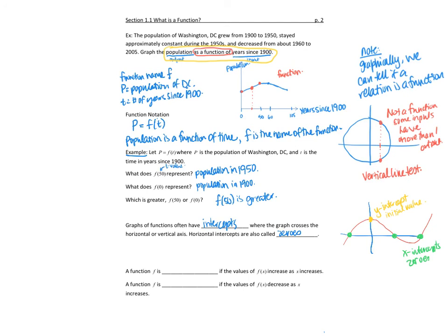A function is increasing if the values of F increase as x increases — as we move to the right, the function values go up. If as x increases the values of the function decrease, then we say it is a decreasing function.